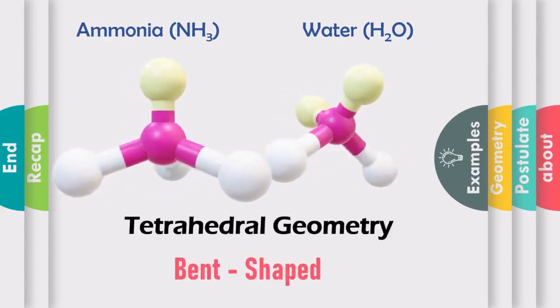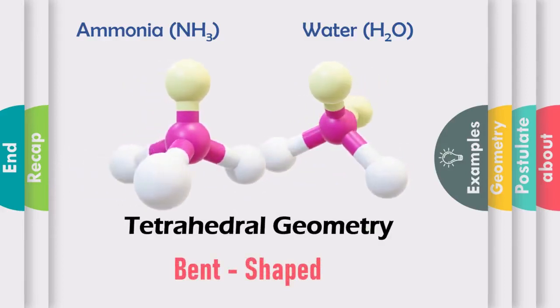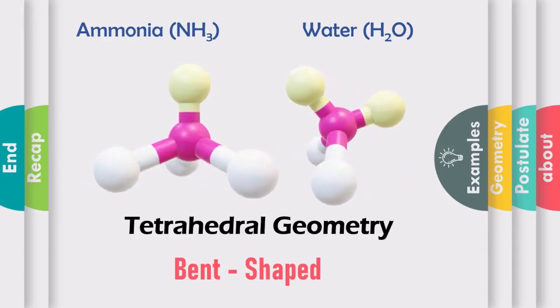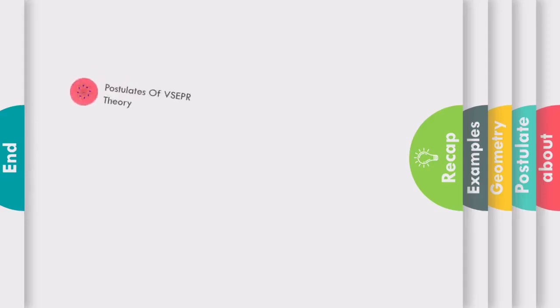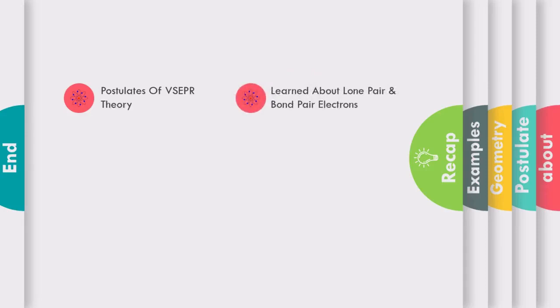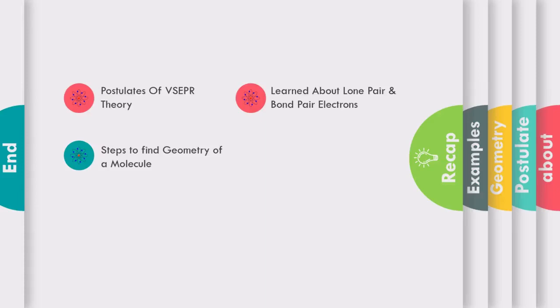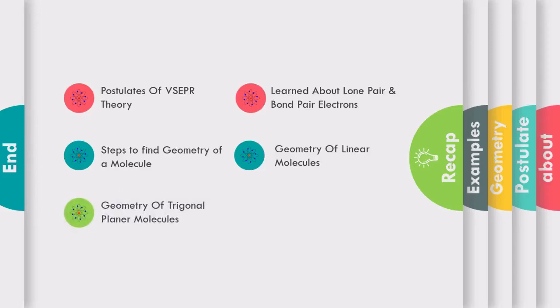I hope you all have understood the different shapes we covered. Let's recap what we learned today: the postulates of VSEPR theory, lone pair and bond pair electrons, the steps to find the geometry of any molecule, and the geometry of linear molecules, trigonal planar molecules, and tetrahedral molecules.